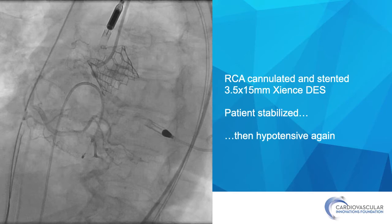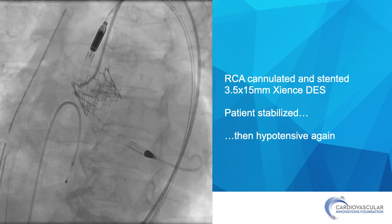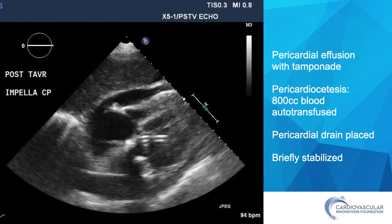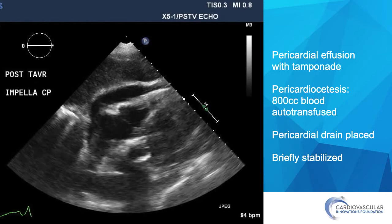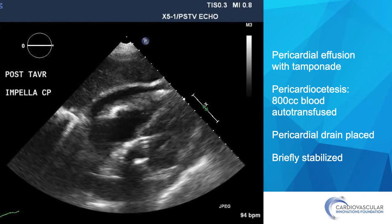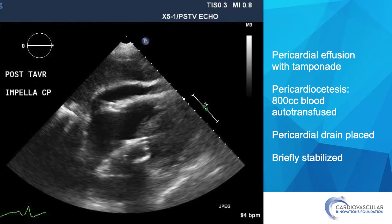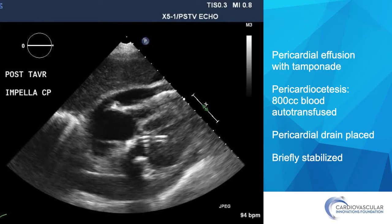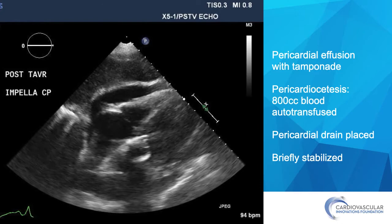The patient stabilized briefly and we all breathed a sigh of relief, but then suddenly the patient became hypotensive again. Repeat echo showed that the patient had developed a large pericardial effusion with evidence of tamponade. Pericardiocentesis was performed — 800 cc's of blood were removed and autotransfused — and a pericardial drain was placed. With drain placement the patient briefly stabilized, but we were extremely concerned about what would tie together this pericardial effusion with her coronary obstruction.